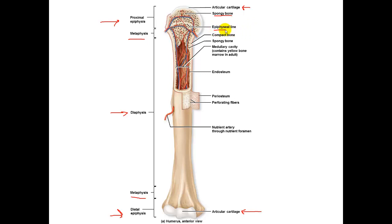Underneath that we have the epiphyseal line. In adults it is called the epiphyseal line, but in children it is called the epiphyseal plate, commonly known as the growth plate. On the edges of the bone we have compact bone that is there for strength and support. Next we have the medullary cavity, which is inside the diaphysis of the bone — a cavity that has blood vessels and nerves running through it. In children it can have red bone marrow. In adults it has yellow bone marrow, which is the inactive red bone marrow, and typically contains a lot of adipose or fat tissue.